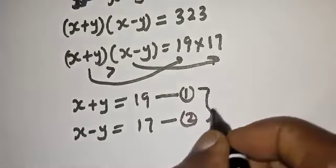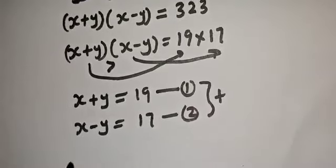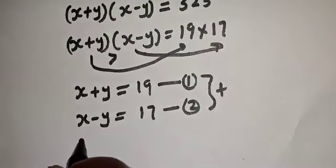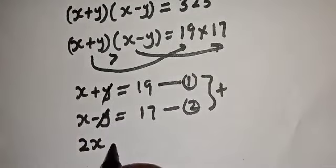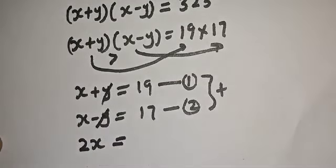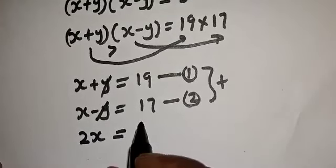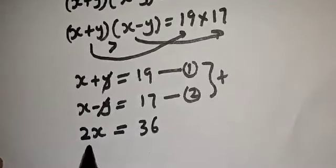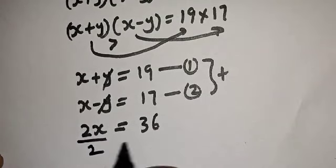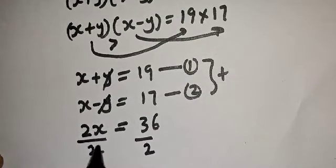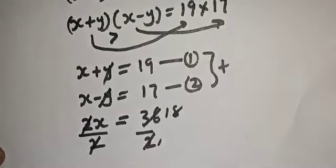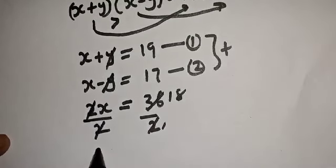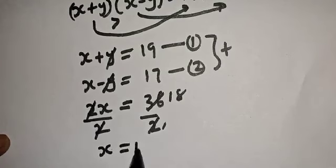Let's add equation 1 and equation 2 together. s plus s gives 2s, and the y terms cancel. This equals 19 plus 17. Now divide both sides by 2: 2s divided by 2 gives s, and 36 divided by 2 gives 18. Therefore, s is equal to 18.